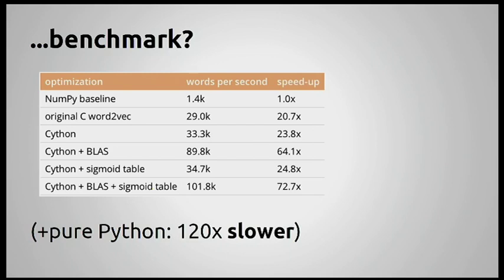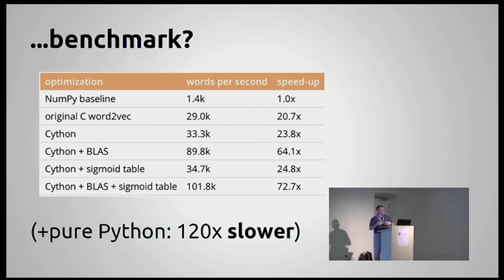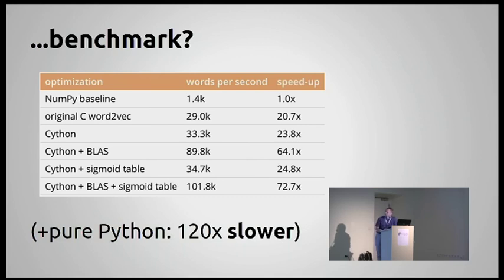I was also interested in going the other direction. I rewrote the NumPy baseline in pure Python just to see how much we get from NumPy itself. The answer is another two orders of magnitude. So from pure Python to nice NumPy: 100 times faster. And from nice NumPy to thoroughly optimized code: another 100 — about 12,000 times faster put together.